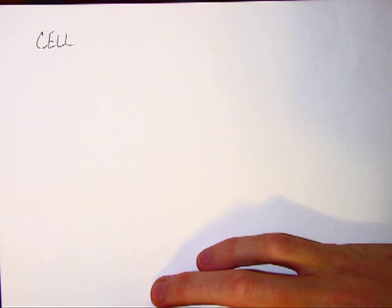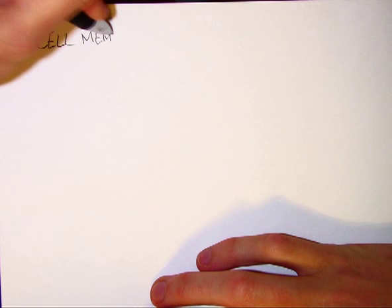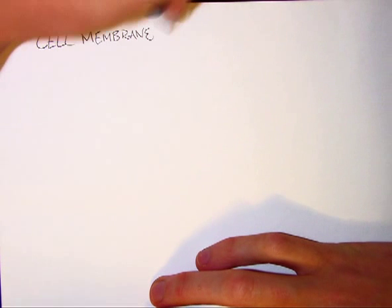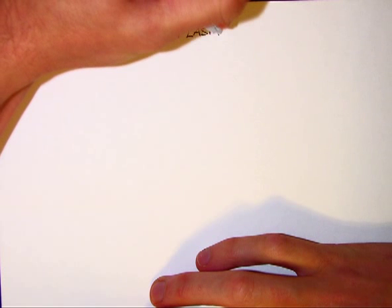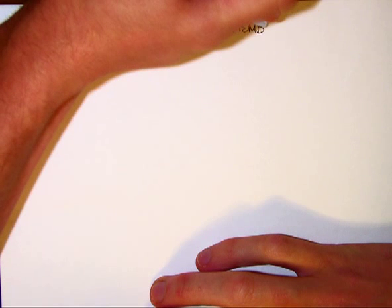Here's a quick review on the cell membrane structure. Science always likes to be confusing, so we have three names for the same thing. We have the cell membrane, which controls what goes in and out of the cell — what we call semi-permeable. Another name for the cell membrane is the plasma membrane.